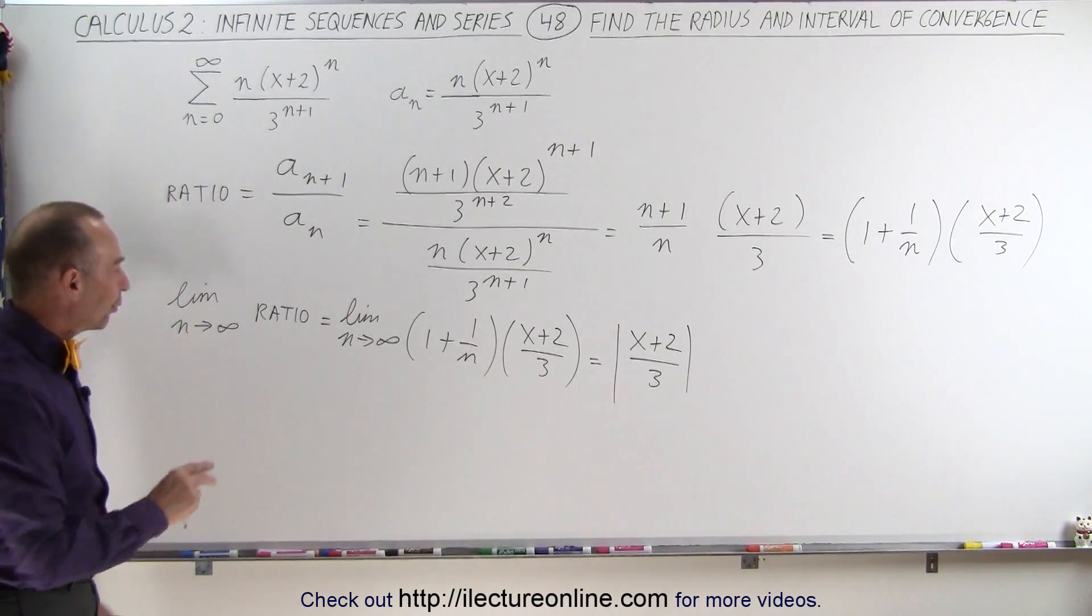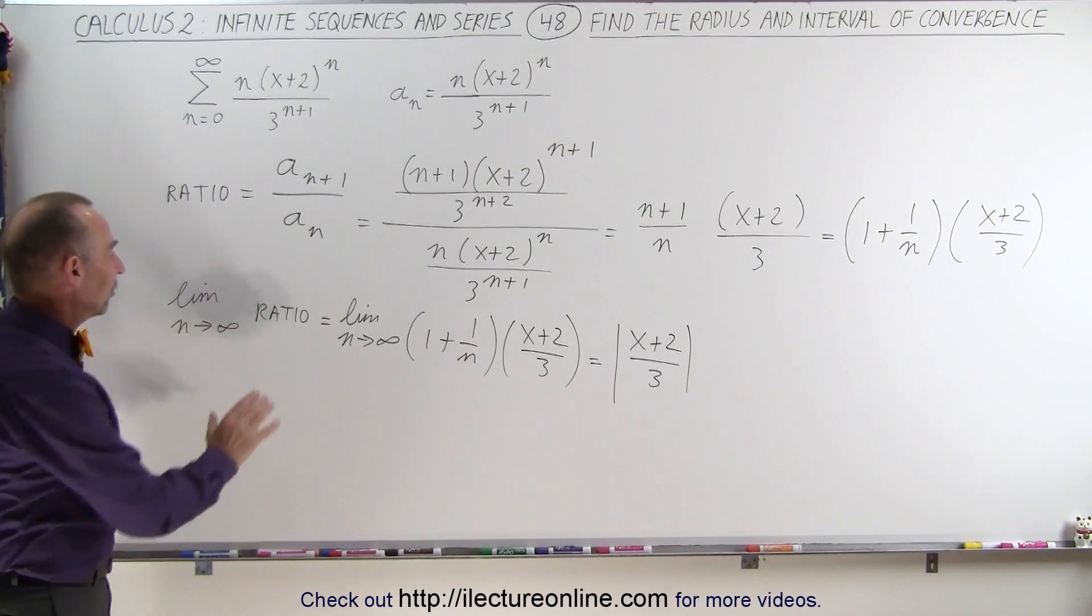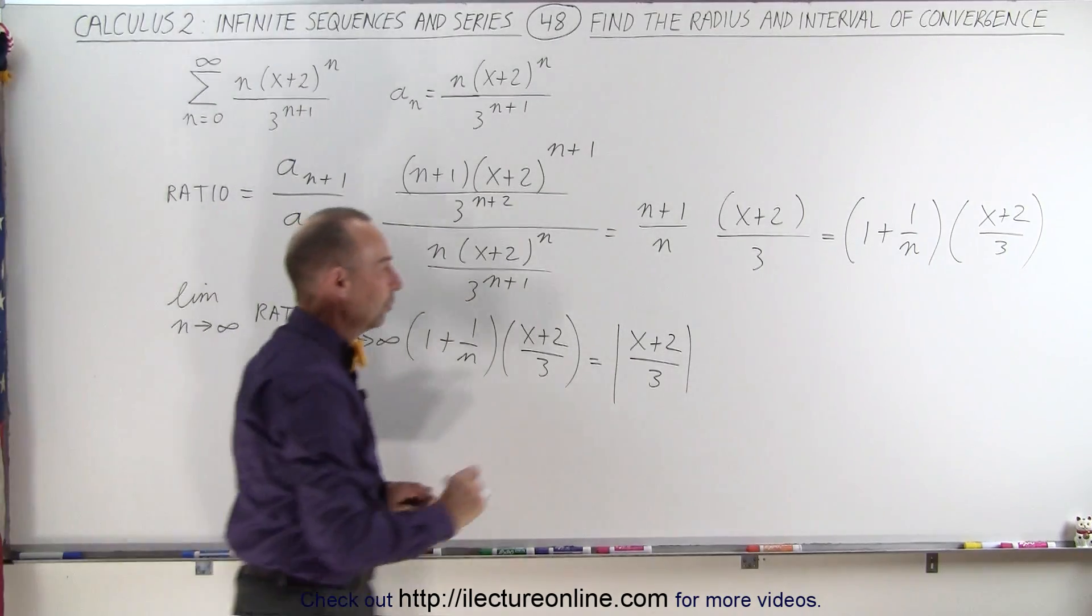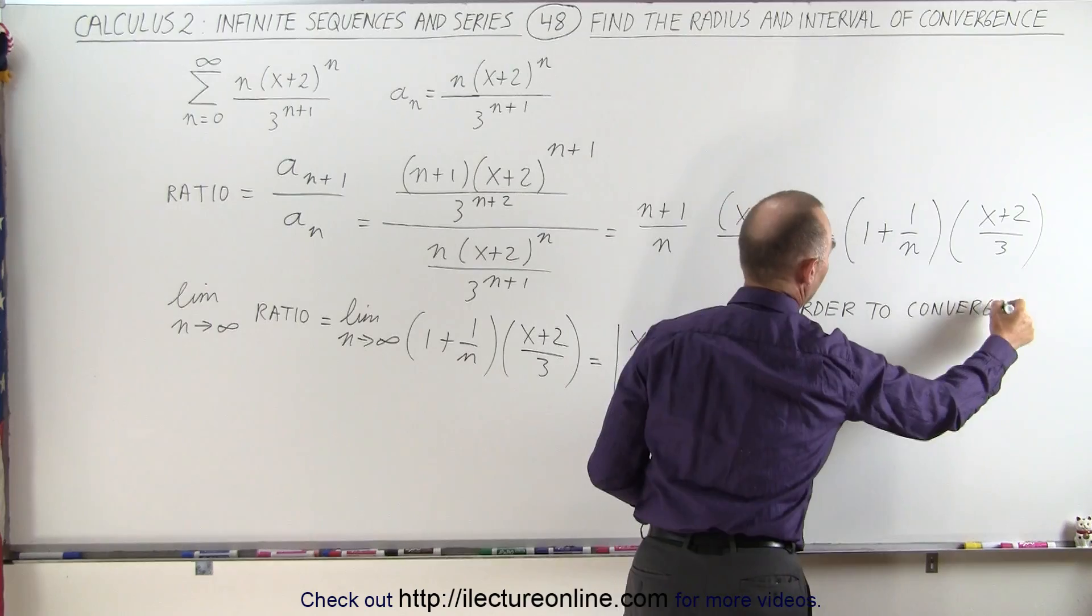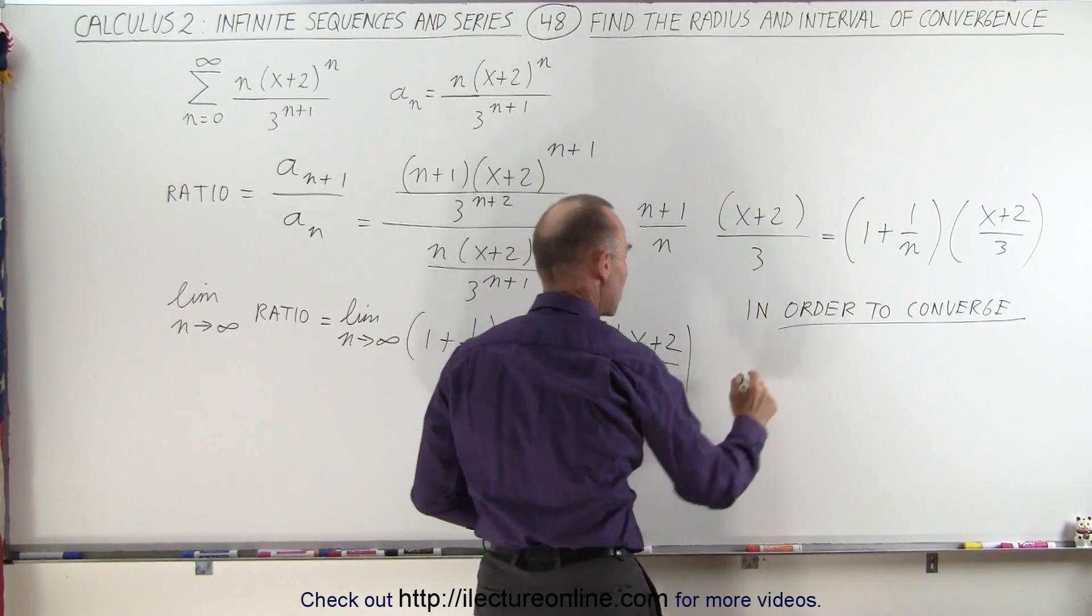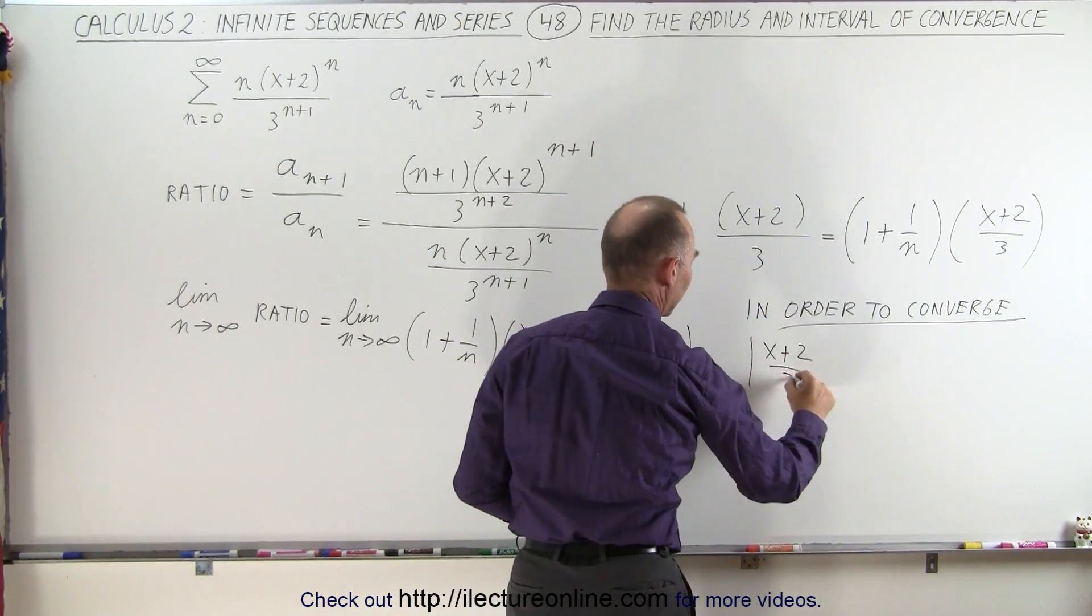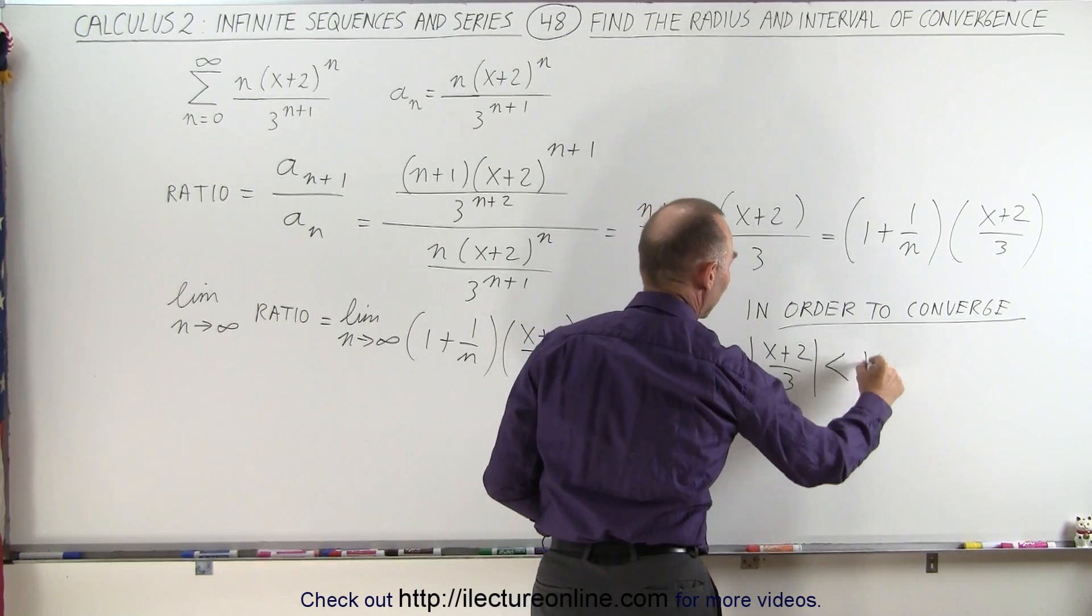Now we know that for this series to converge, this ratio must be less than 1. So in order to converge, we want this quantity here, the value of (x+2) divided by 3, we want that to be less than 1.